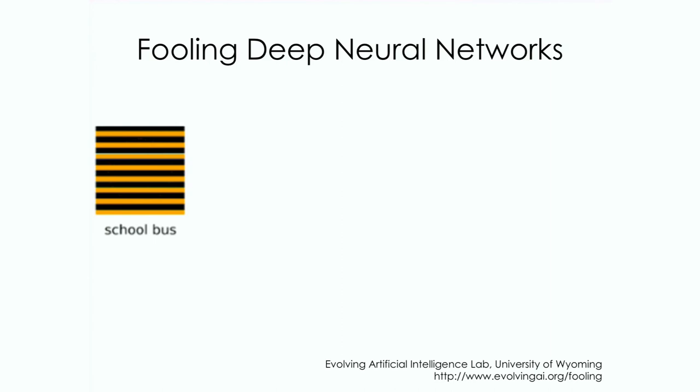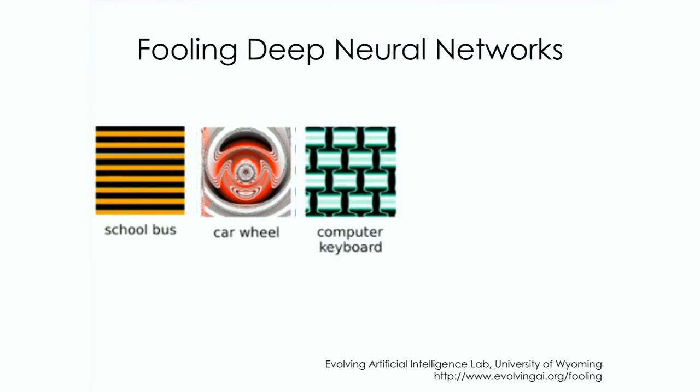So they've done some work showing how you can easily fool these deep neural nets. So here, let me give you an example. So a school bus looks like this to the machine. If you look at a car, this is how it could see a car wheel. It would identify this as a car wheel. Here's a computer keyboard. I'm not sure I can pull that out at all. This one's really confusing to me. Here's a green snake.